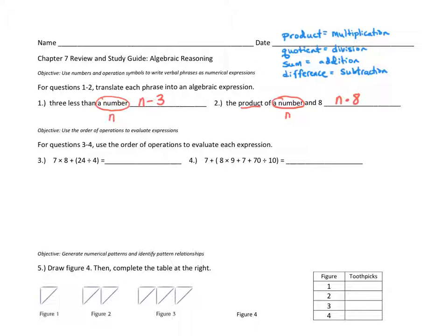The second objective is to use the order of operations to evaluate expressions. Remember that the order of operations is parentheses, exponents, multiplication and division in the order we see them, and then addition and subtraction also in the order you see them. Our directions say evaluate, which means we use our order of operations to find the value of each expression.